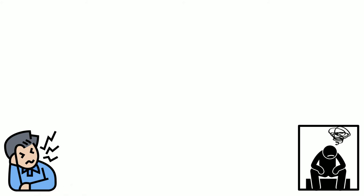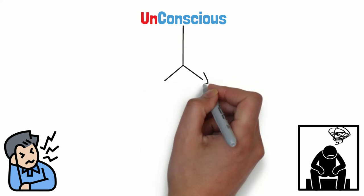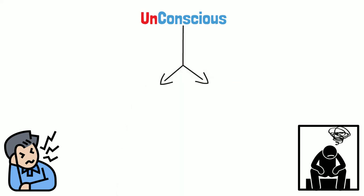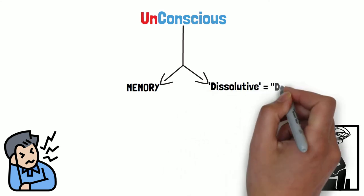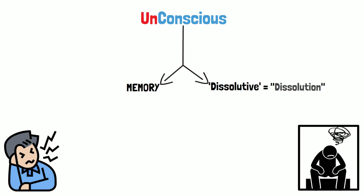So there's the memory function of the unconscious, and there's the dissolutive function. That's an interesting one. The unconscious contains habits once voluntary, now automatized, and dissociated elements of the personality which may lead a parasitic existence.